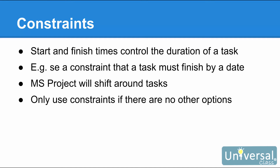You already know that task start and finish times control the duration of a task and determine its timing. A constraint comes into play when the project starts to run late. For example, when you set a constraint that a task must finish by a certain date, Microsoft Project will shift around almost any other task in the schedule to recalculate timing. Putting a constraint on a task means that everything else scheduled for your project might be shifted to meet that constraint. Because of this, you should only use constraints if there's no other option.